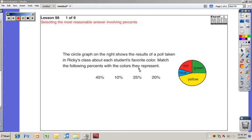The circle graph on the right shows the results of a poll taken in Ricky's class about each student's favorite color. Match the following percents with the colors they represent. The larger the percent, the larger the piece of the pie. Isn't that hard? We got 45, 10, 25, and 20.